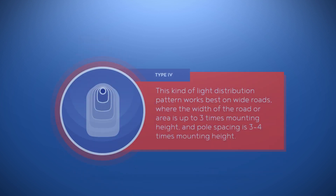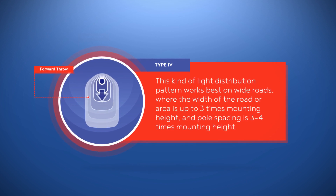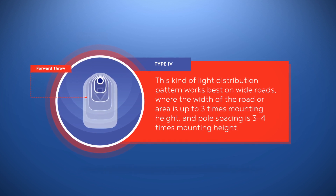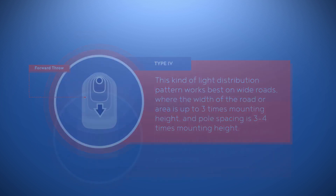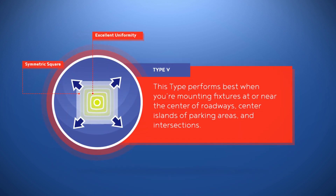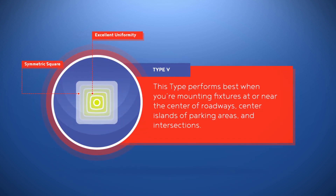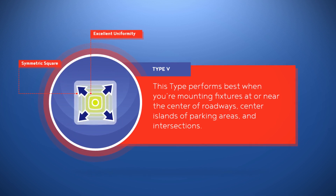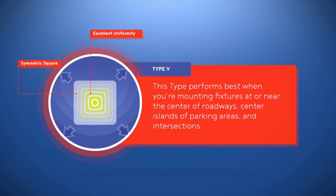Type 4: this forward throw light distribution pattern works best on wide roads, where the width of the road or area is up to three times mounting height, and pole spacing is three to four times mounting height. Type 5: because of its symmetry, this type performs best when you're mounting fixtures at or near the center of roadways, center islands of parking areas, and intersections.